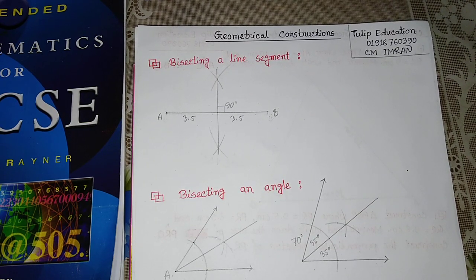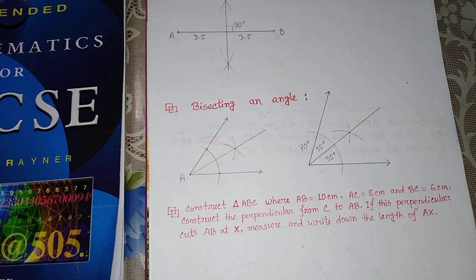The problem is: Construct triangle ABC where AB equal to 10 cm, AC equal to 8 cm and BC equal to 6 cm. Construct the perpendicular from C to AB. If this perpendicular cuts AB at X, measure and write down the length of AX.